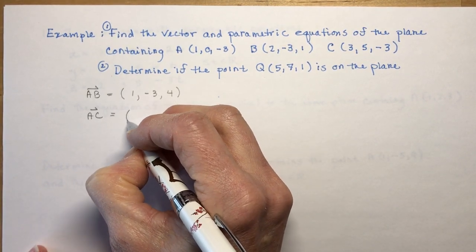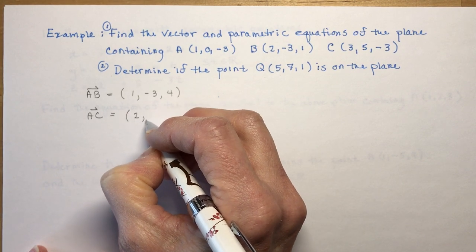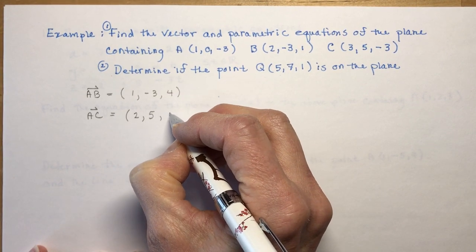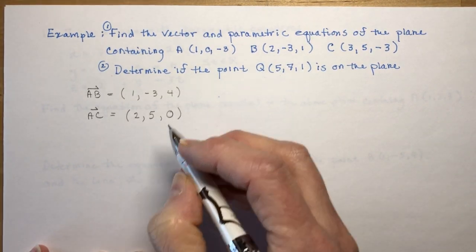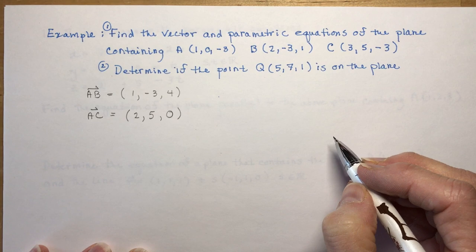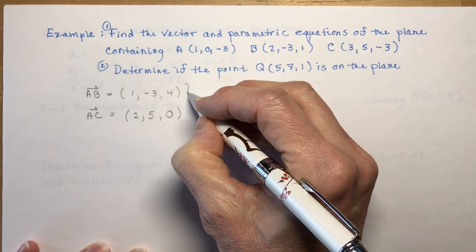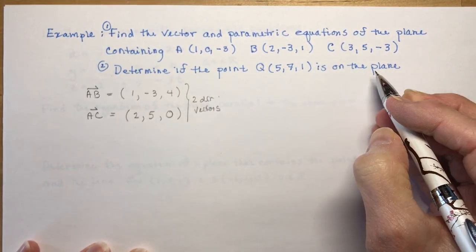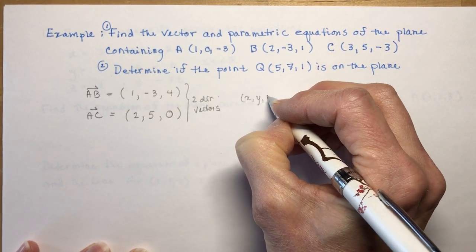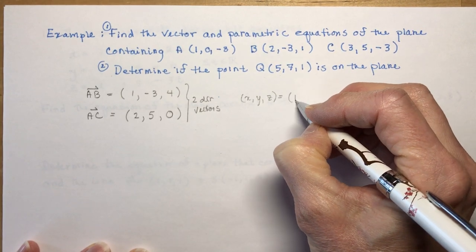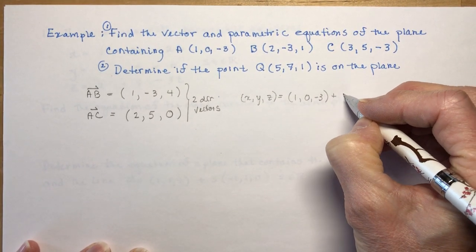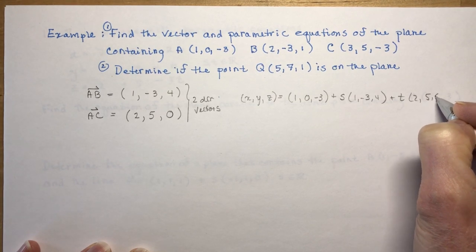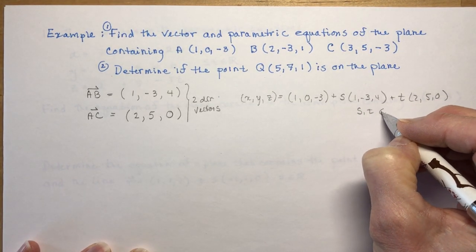The second direction vector AC: 3 minus 1 is 2, 5 minus 0 is 5, and minus 3 minus minus 3 is 0. So now I have two direction vectors. The vector equation of the plane using point A is: X, Y, Z equals (1, 0, minus 3) plus S times (1, minus 3, 4) plus T times (2, 5, 0), where S and T are elements of real numbers.